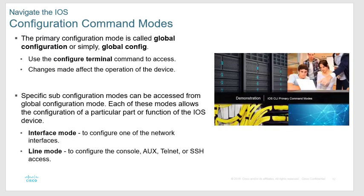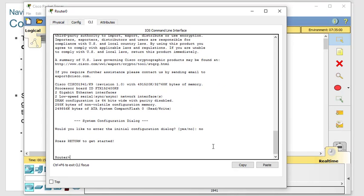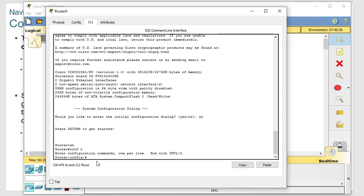The third mode is global mode. From global mode, we can actually make configuration changes. In user mode, I can view a few minor things. In privileged mode, I can do all my viewing, gather information, and manipulate IOS files and configuration files. But global mode is where I actually set things — I can set the name of the router, set IP addresses, things like that. When the prompt says 'router(config)' you're in global mode. You can type 'config t' or 'conf t' to get there, and 'en' for enable.